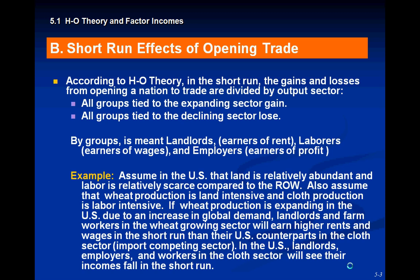Based on the example given by the PowerPoint: assuming the US has land that is relatively abundant and labor relatively scarce compared to the rest of the world, the US has an abundance of land and a shortage of labor, while the rest of the world has an abundance of labor and a shortage of land. So the US will produce wheat, which is land-intensive, and the rest of the world will produce cloth, which is labor-intensive. If wheat is the expanding sector, then landlords will gain in the short run and laborers will lose in the short run.